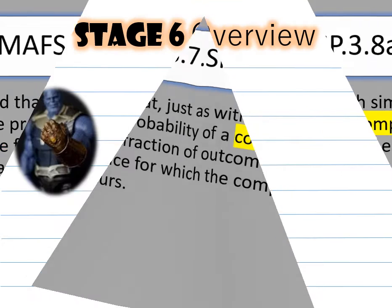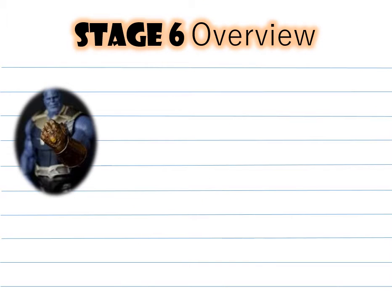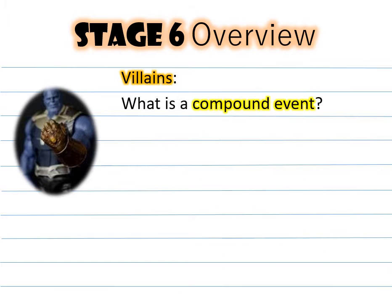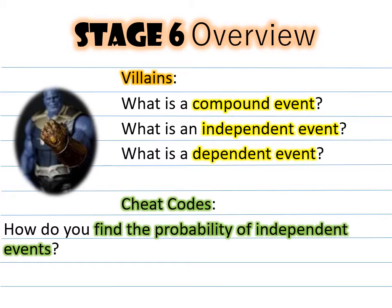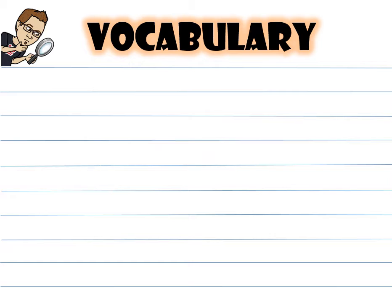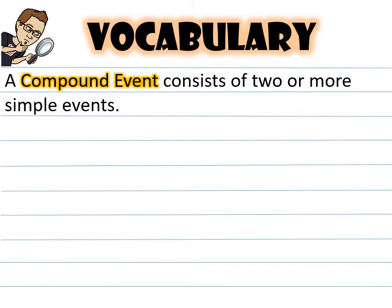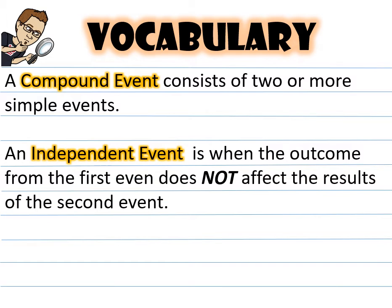Let's take a look at the stage 6 overview. For the vocabulary: what is a compound event? What is an independent event? And what is a dependent event? For the cheat codes: how do you find the probability of independent events? A compound event consists of two or more simple events. An independent event is when the outcome from the first event does not affect the results of the second event.